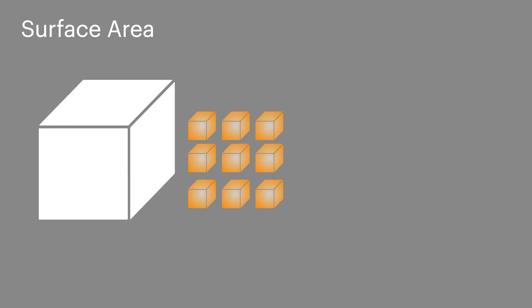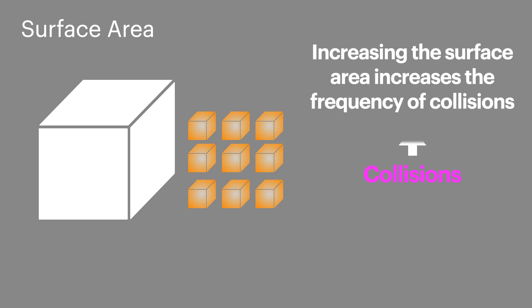When one of the reactants is a solid, changing the surface area has an impact on the rate of reaction. Only particles on the surface of the solid are available to react. So if you increase the surface area — usually by breaking it into smaller pieces or grinding it into a powder — more particles are available for reaction. This increases the frequency of collisions, which in turn increases the rate of reaction.